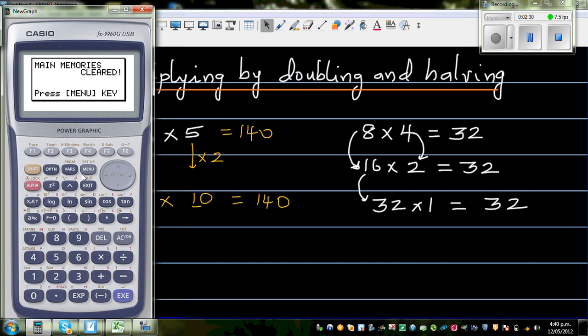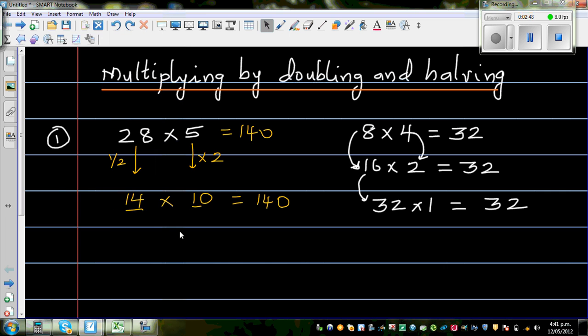Always good to understand what is the pattern there. So 28 times 5 is 140. And 14 times 10, you don't need a calculator for that. That is also 140.